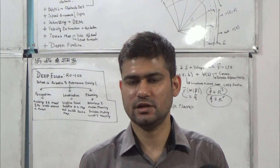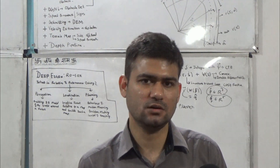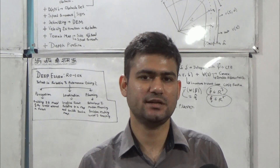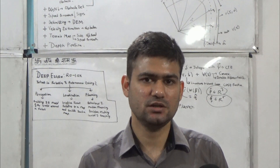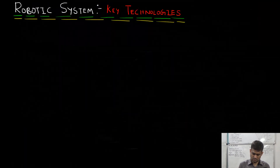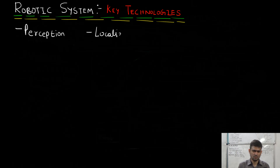As we discussed, any autonomous vehicle, robotic system, or robot in general has three key major technical components or algorithmic pipelines. These three major components are perception, localization, and planning. We will discuss perception first.